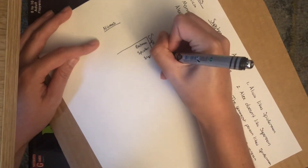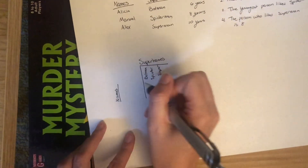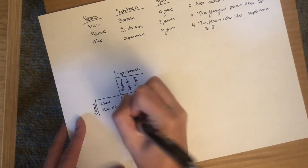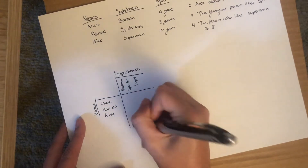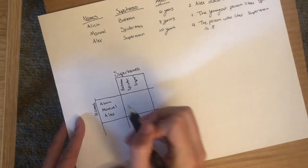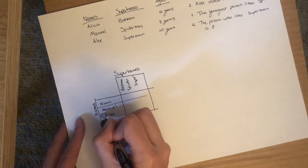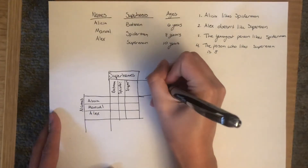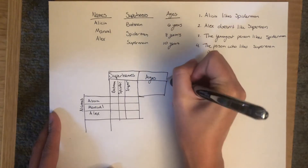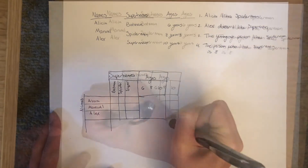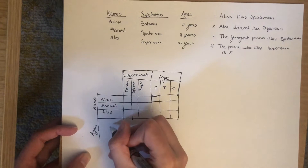I'm going to start by writing superheroes: Batman, Spider-Man, and Superman. I want that linked to everyone's name, so going down I'll add a row with names: Alicia, Manuel, and Alex. Now we have a grid where Alicia, for example, can be linked to Batman, Spider-Man, or Superman, and everyone's name can correspond to one of the superheroes. We also want to link ages with names, so across the top I'll write ages — six, eight, or ten. And we also need to write ages below names so we have a space to link ages and superheroes in that grid.